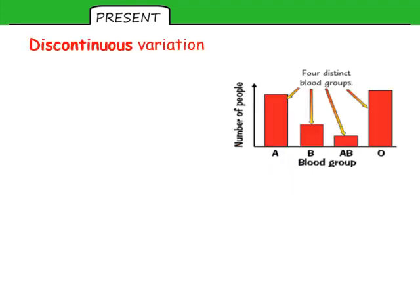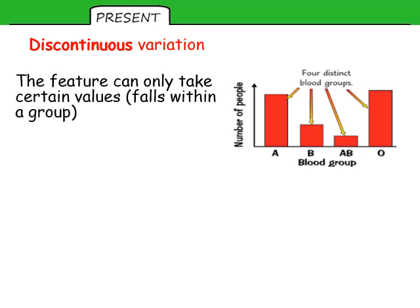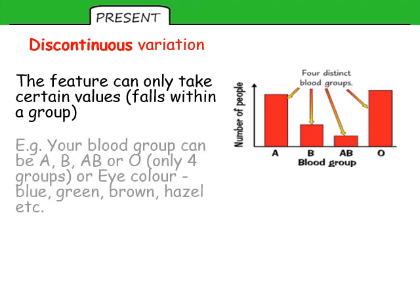Next, discontinuous variation, which many people find a little easier. With discontinuous variation, the feature can only fall into certain groups. For example, blood group: if you investigated everyone in your year's blood group, there are only a certain number of groups you can belong to — unlike height, where you could have any value between a minimum and maximum. Another example is eye color: in your year group, everyone would belong to blue, green, brown, hazel, etc. — you can't have a random eye color because those don't exist.